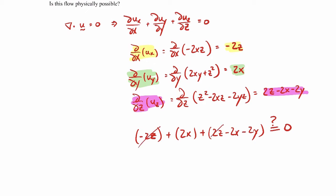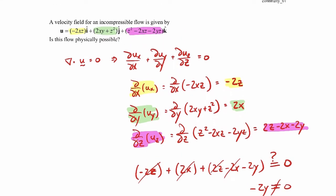Well, the minus 2z cancels out with that one. Here's a 2x that cancels out with that one. And we end up with minus 2y, which clearly does not equal zero in general. So we can say that this flow field is not physically possible. The answer is no.